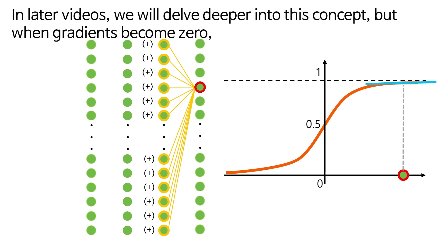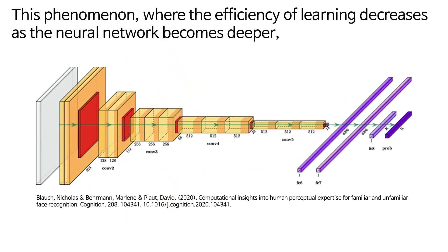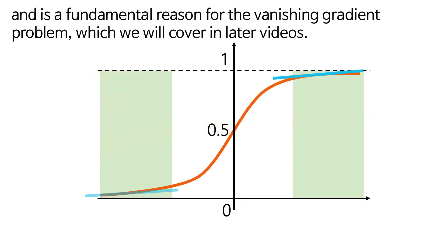In later videos, we will delve deeper into this concept, but when gradients become zero, it means that the learning effect of backpropagation is also close to zero. This phenomenon, where the efficiency of learning decreases as the neural network becomes deeper, is known as the sigmoid saturate and killing gradients problem, and is a fundamental reason for the vanishing gradient problem, which we will cover in later videos.